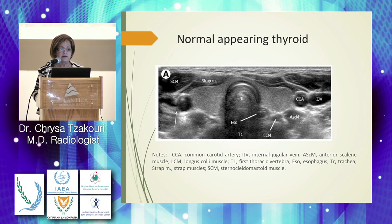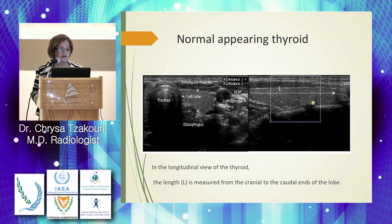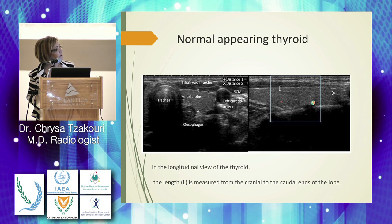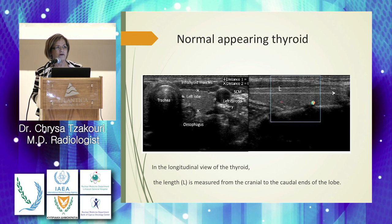Regarding measurements, the longitudinal dimension is measured from one end to the other, along with the transverse and anteroposterior dimensions. Normal size ranges are 1.5 to 2 cm in the anteroposterior and transverse dimensions, and 3 to 4 cm in the longitudinal dimension.